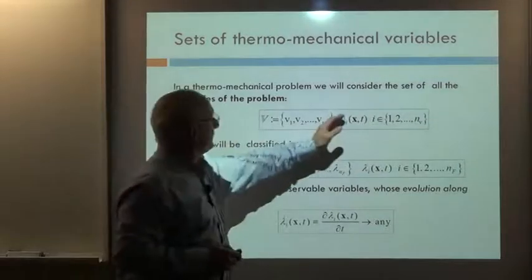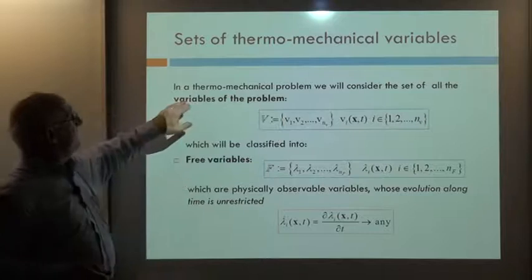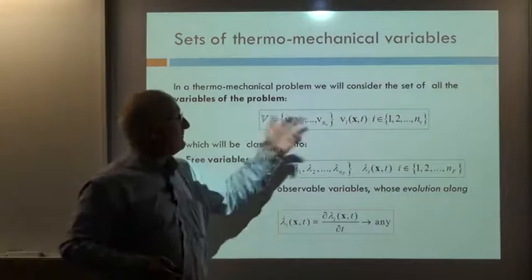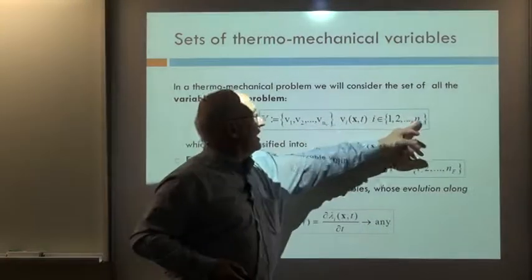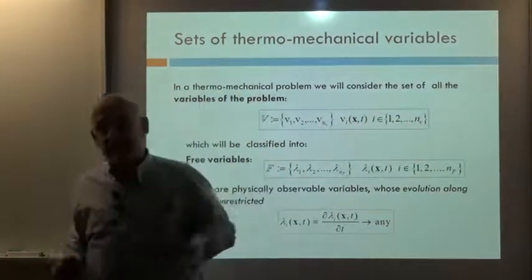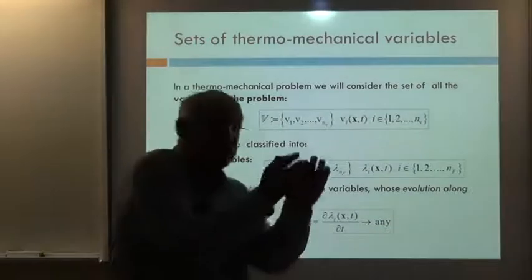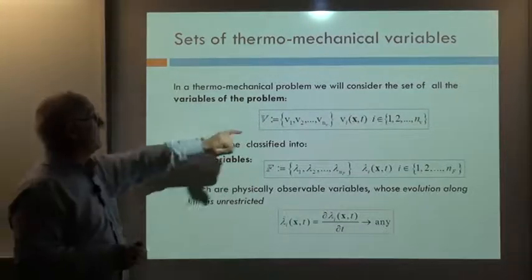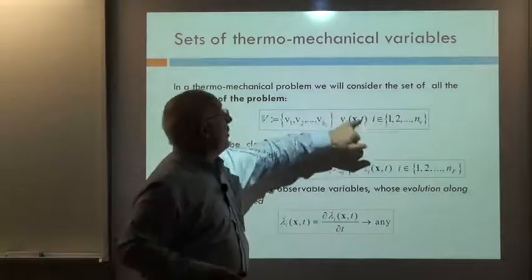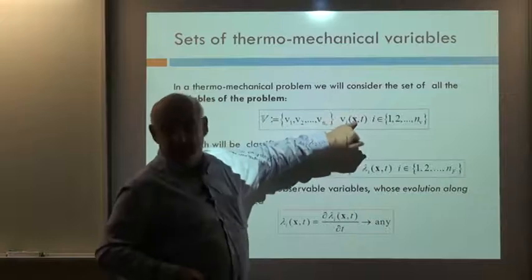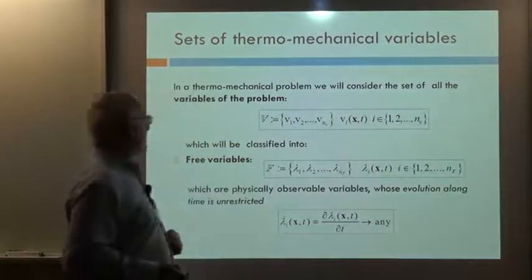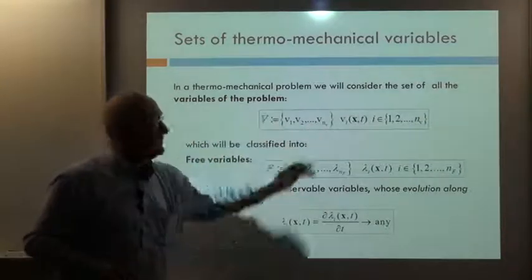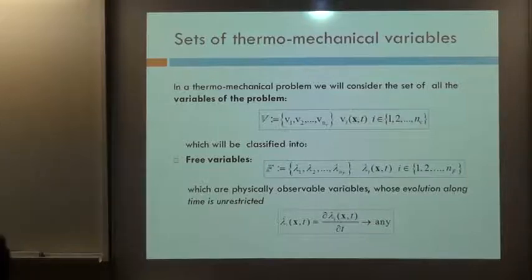So these variables define the total variables of the problem — it's a set with a number of variables, Nv, the number of variables of the problem. Sometimes we'll be interested in just a small number of variables, sometimes a larger number. In general, all these variables depend on space and time. But not all these variables are the same — they can be classified into different subsets.